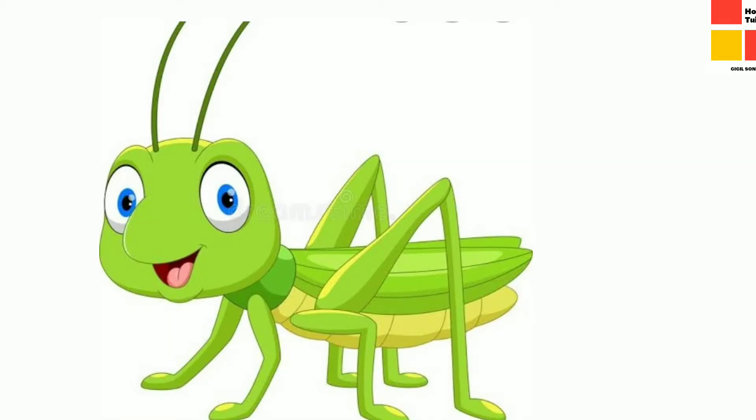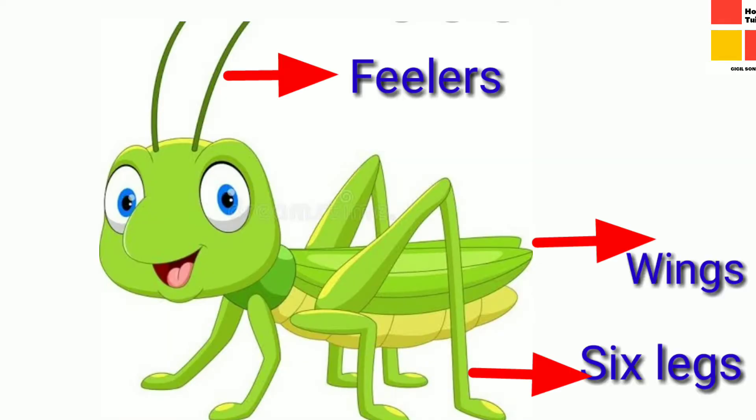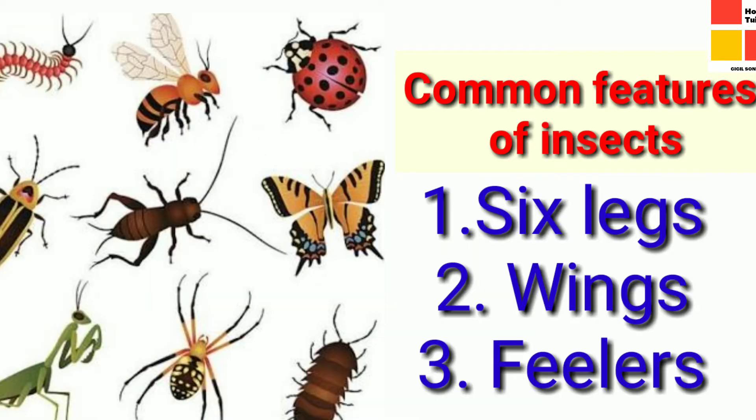Insects are small living things that have six legs, wings, and feelers. These are the common features of insects. So let's study one by one.